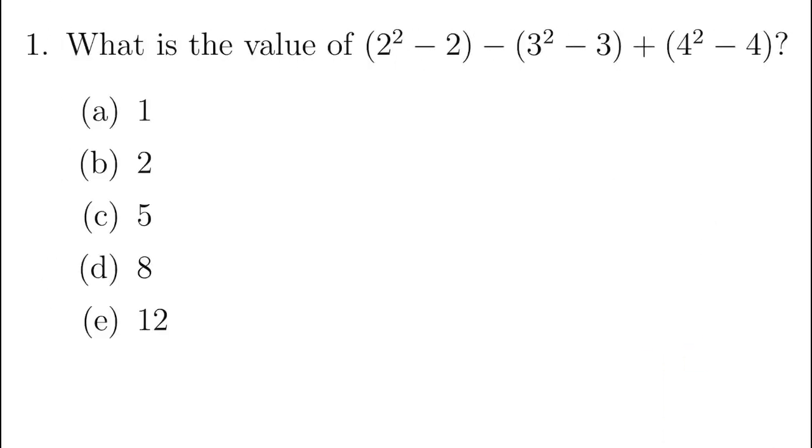Question 1. By direct computation, we can see that the values in each bracket are 2, 6, and 12 respectively. So 2 plus 12 minus 6 is 8. Answer is D.